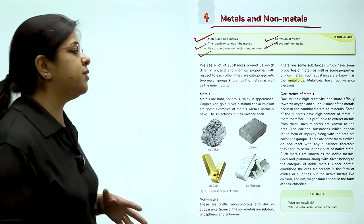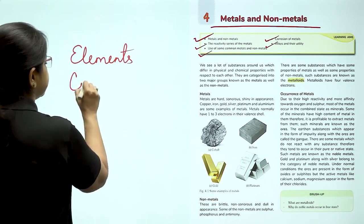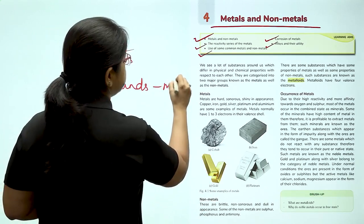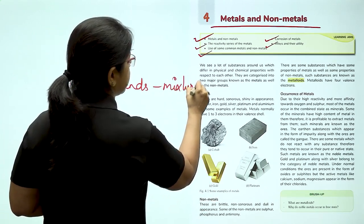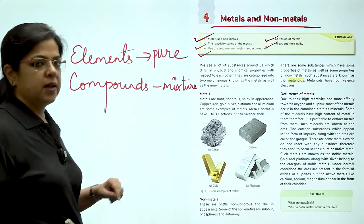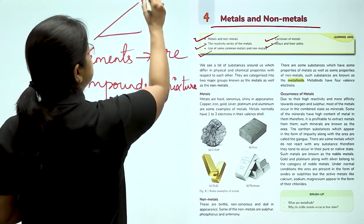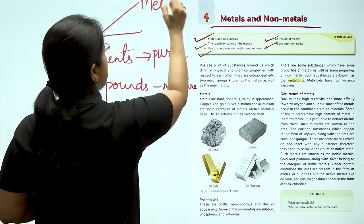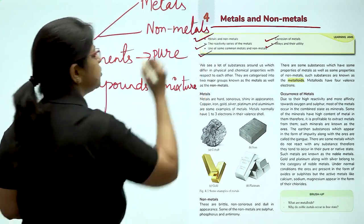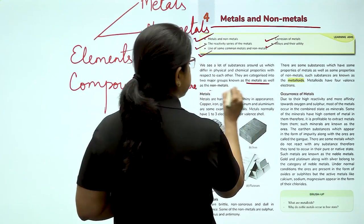In the previous classes, we have learned that there are two kinds of substances: elements and compounds. Compounds are basically mixtures of two or more elements and elements are pure substances. Now, these elements in nature can be divided into metals and non-metals. This is a division for most of the elements. They are categorized as metals and non-metals.